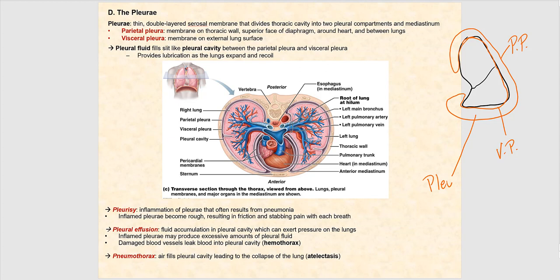The pleural cavity is filled with a thin layer of pleural fluid — just enough so that when we breathe, the visceral and parietal pleura slip across each other. It's all about lubrication — minimizing friction between these two membranes. The mesothelium that makes up both layers of pleura produces this fluid.